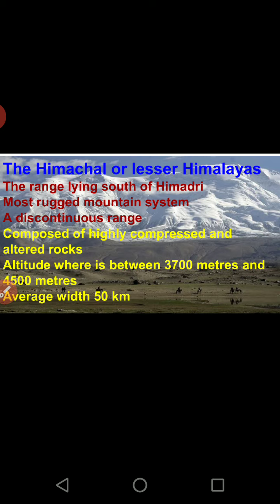Moving to the second range, Himachal — this is the central range, also called the Lesser Himalayas as they are less in height than Himadri. This range lies south of Himadri. It is the most rugged mountain system — not symmetrical at all, with very rough mountains.